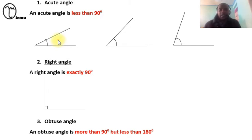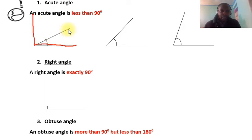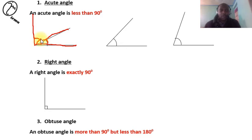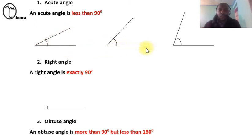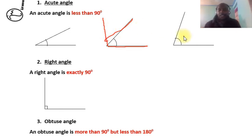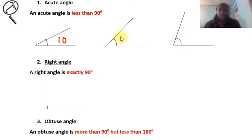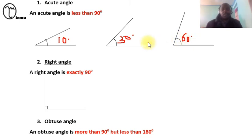Coming back to an acute angle — it is less than 90 degrees. Because we know 90 degrees should stretch up to here, you can see this angle is less than 90, smaller than 90 — that's why we call it an acute angle. For example, this angle might be about 10 degrees, another about 30 degrees, and another about 60 degrees. Any angle less than 90 degrees is referred to as an acute angle.